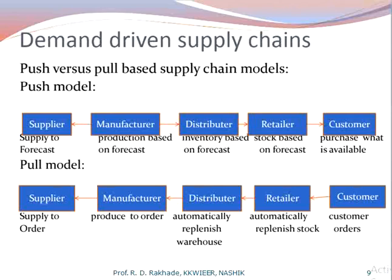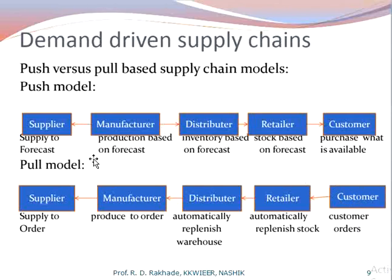There are two basic strategies in supply chain management: the push model and the pull model. In the pull model, the supply chain is initiated from the customer. A customer order is received by the retailer, passed to the distributor, then to the manufacturer, and the manufacturer supplies accordingly. The chain starts from the customer and works inversely up the supply chain.